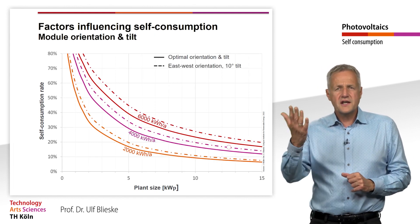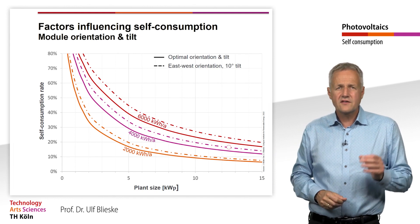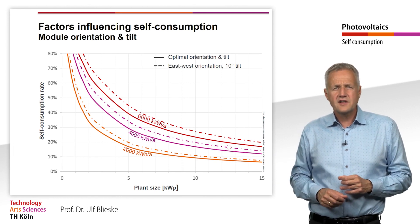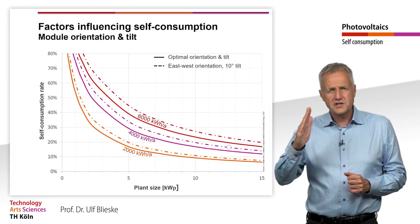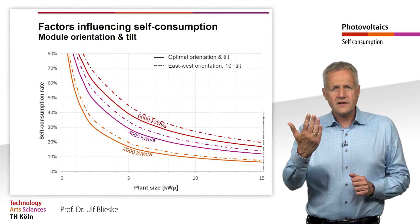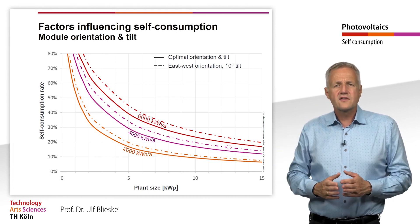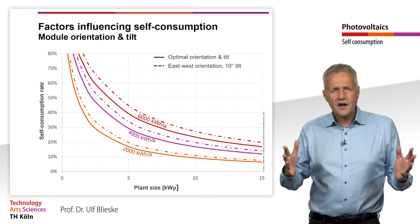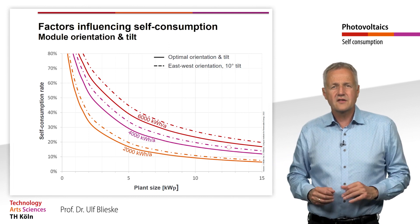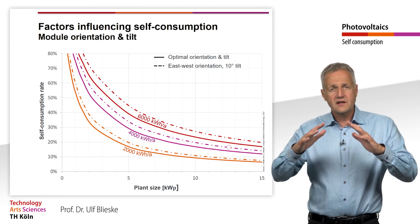In addition, the orientation and the tilt of the PV generator also has an influence on the amount of self-consumption. Shown here are the self-consumption rates for optimal orientation and tilt, as well as for east-west orientation and 10% tilt. With modules that are not optimally oriented, the annual yield is somewhat lower. As a result, there are fewer surpluses and the self-consumption rate increases.